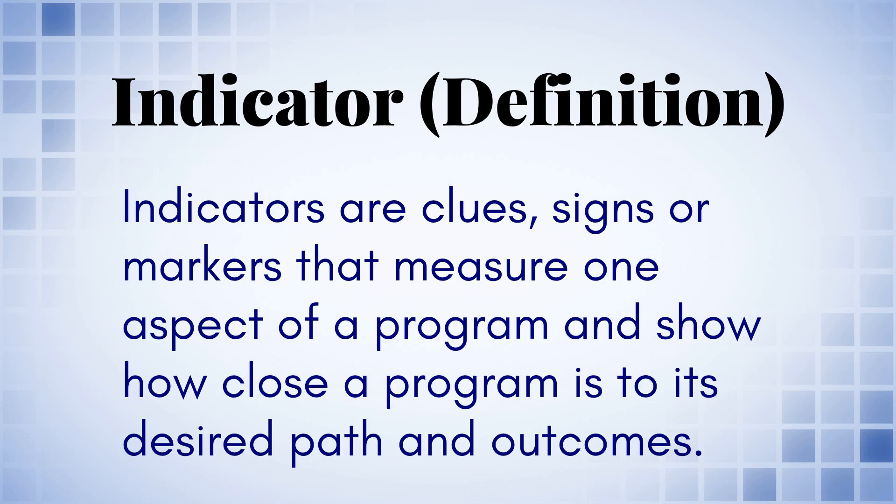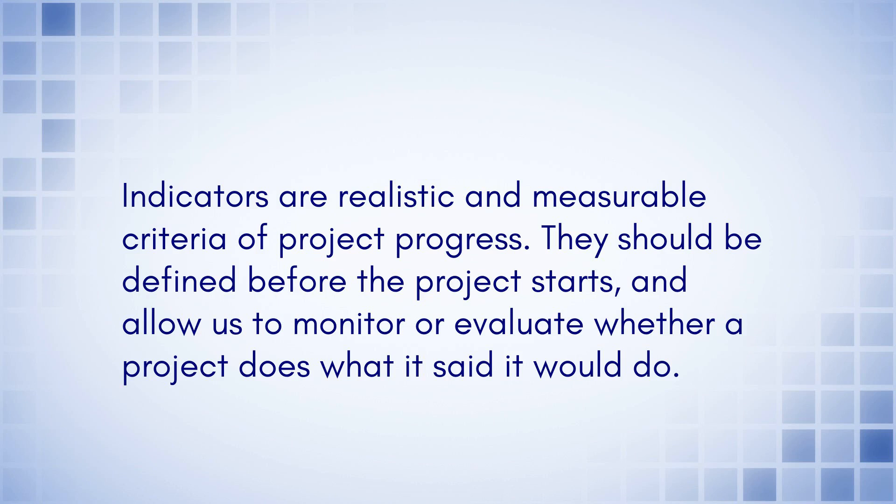Indicator definition. Indicators are clues, signs or markers that measure one aspect of a program and show how close a program is to its desired path and outcomes. Indicators are realistic and measurable criteria of project progress. They should be defined before the project starts and allow us to monitor or evaluate whether a project does what it said it would do.